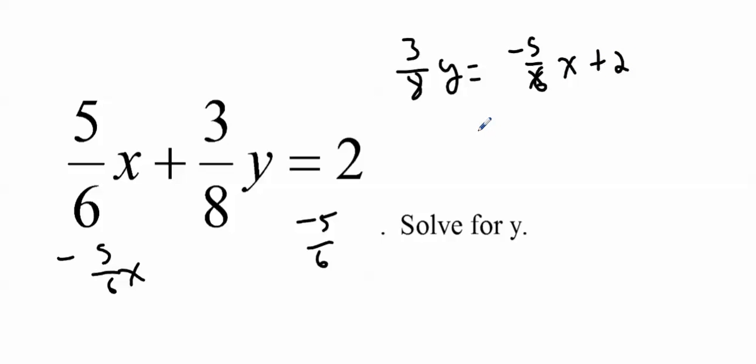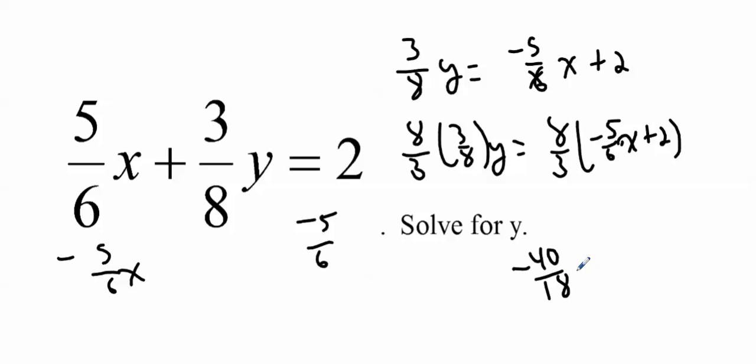Now I want to get Y completely by itself, so what I'm going to do is multiply both sides by 8/3. That's the reciprocal, and that's going to knock it out and turn it into a 1. So it's 8/3 times negative 5/6 X plus 2. So then what that becomes is negative 40 over 18 X plus 16 over 3, and that's equal to Y. Now we can simplify that negative 40 over 18, I believe that's negative 20 over 9 X plus 16/3.